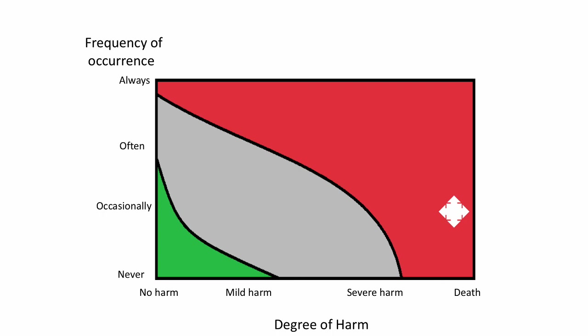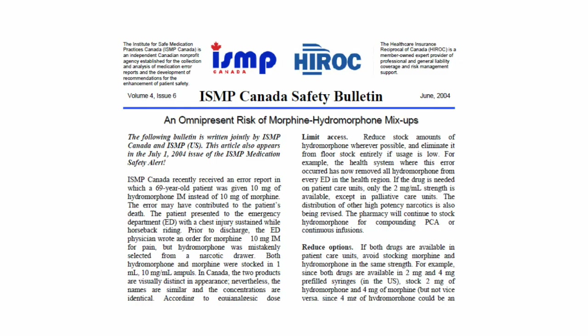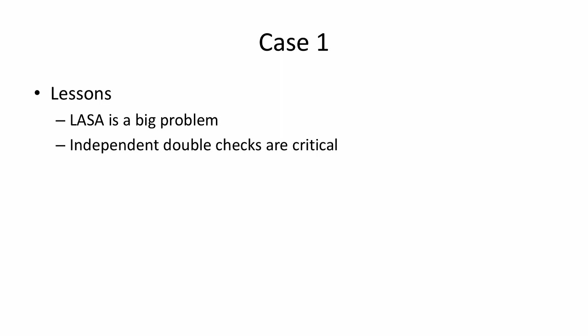At that time, these events occurred relatively frequently and caused deaths. In June 2004 we wrote about this and broadcast it to our network, trying to influence hospitals to make changes. Key lessons: hydromorphone and morphine look-alike/sound-alike confusion was a big problem; storage organization of these medicines was also a major issue; and independent double-checks — not in place at the time — would likely have increased safety.